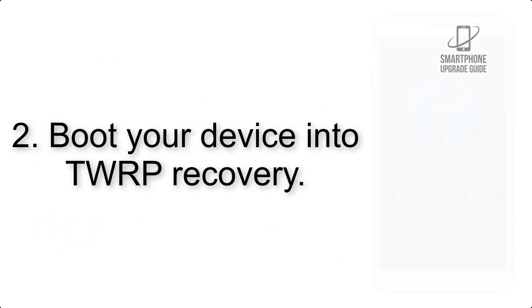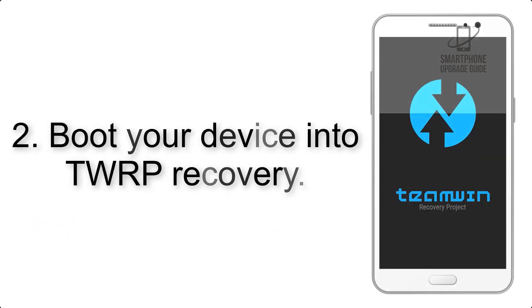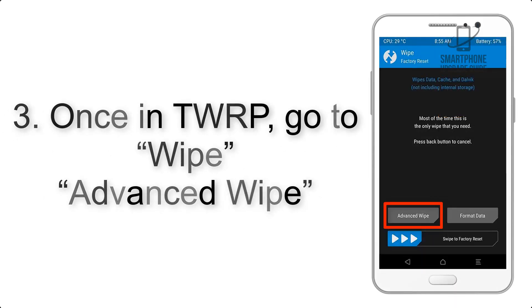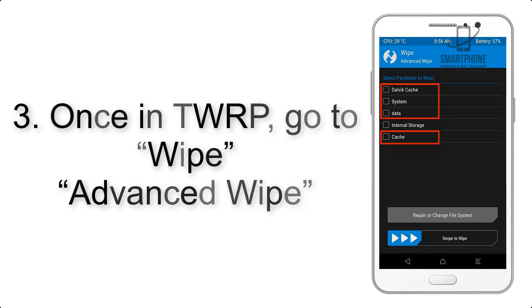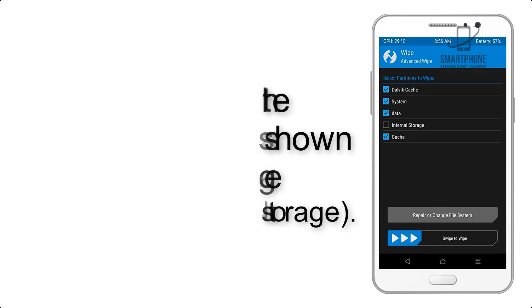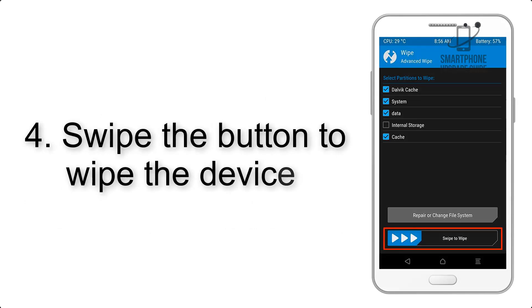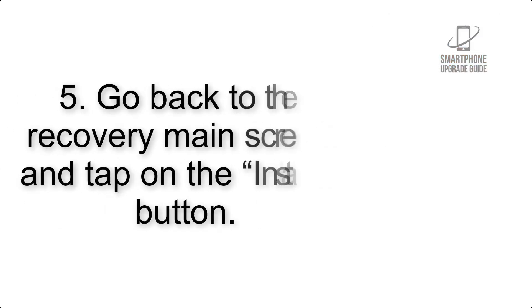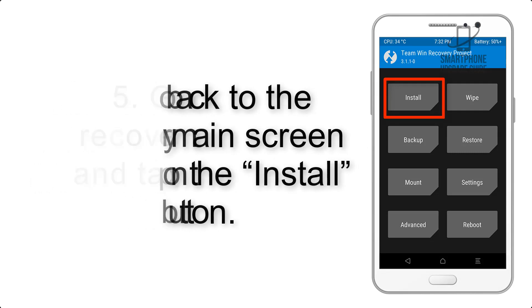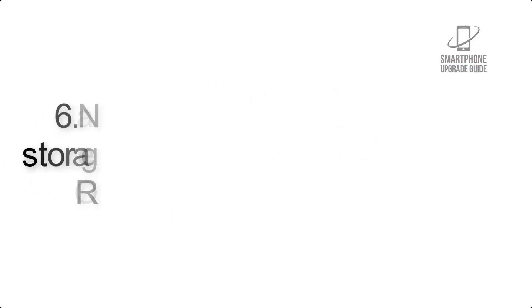Step 2: Boot your device into TWRP recovery. Once in TWRP, click on Wipe, then Advanced Wipe, and select the checkboxes as shown in the image, excluding internal storage. Step 4: Swipe the button to wipe the device.